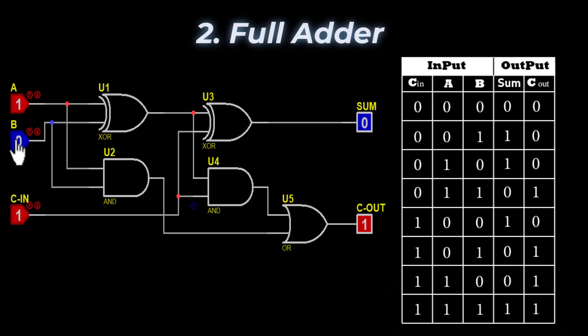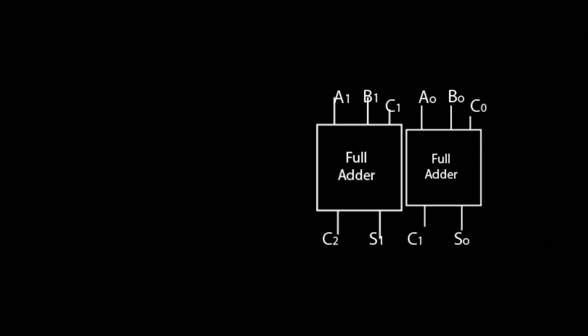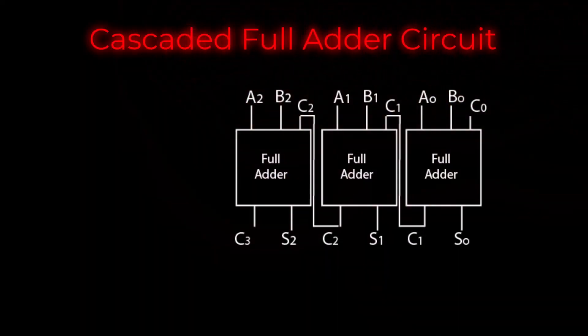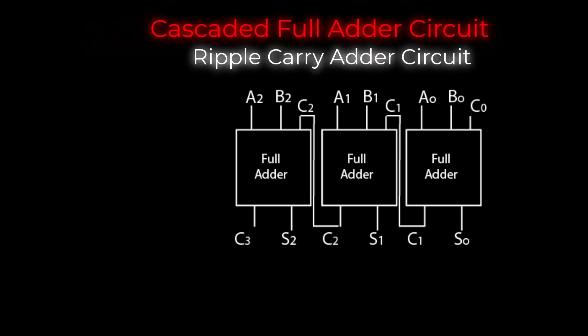We have discussed single-bit adder circuits using logic gates. By cascading single-bit full adder circuits, we can add two multi-bit binary numbers. This type of cascaded full adder circuit is called a ripple carry adder. In a ripple carry adder, the carry out of each full adder becomes the carry in of the next most significant adder, so the carry bit ripples into each successive stage.